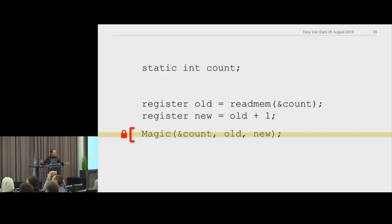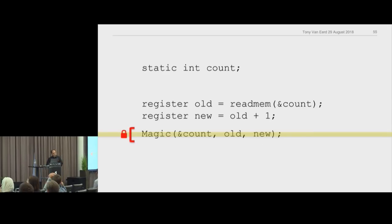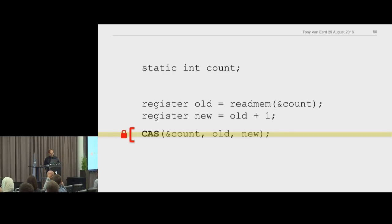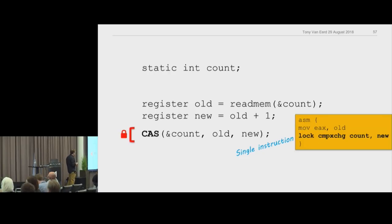We're going to write magic. Let's imagine we have a magic function that does what we need: if count hasn't changed, update count, in such a way that no one can get between those two statements. We'll call this magic function CAS — old school — which stands for Compare and Swap, Compare and Set, or Compare Exchange. That magic function gets down to a single assembly instruction: a compare-exchange instruction.